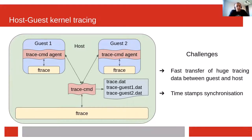Ftrace uses local clocks for timestamping the events. In order to merge them, all events must be in the same time space — event timestamps must be synchronized. The accuracy of this synchronization is essential; the timestamps have nanosecond precision. There is already a user space tool designed to configure Ftrace, control the tracing, collect the data, and save it in a file: Trace-cmd. Trace-cmd is easy to extend to support host-guest tracing, but there are a few challenges that have to be solved: fast transfer of huge tracing data between host and guest, and synchronizing event timestamps.